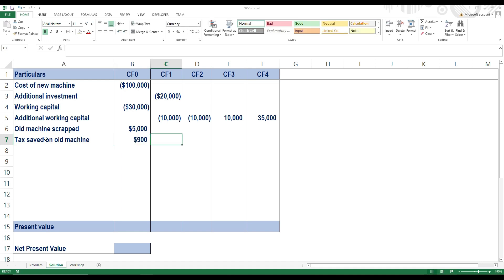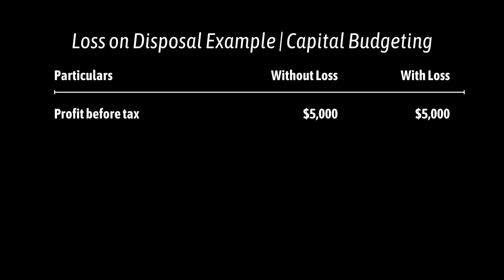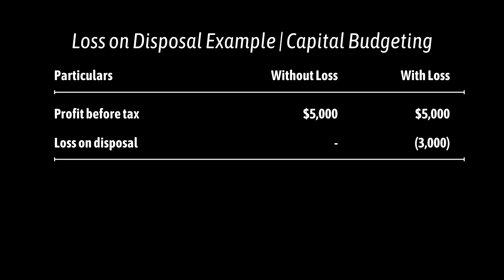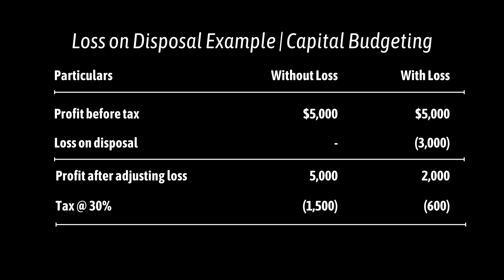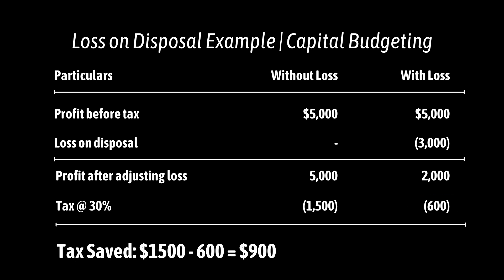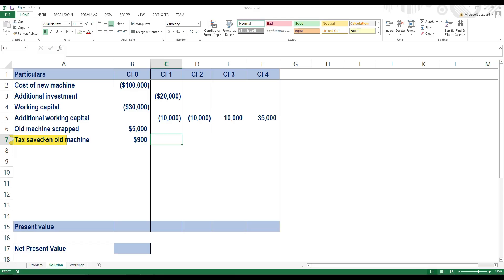Let me explain the tax saving with a comparative example. Assume company profit before tax is $5,000. In the first case with no loss on disposal, the company pays 30% tax on $5,000, which is $1,500. In the second case, with a loss on disposal of $3,000, the profit reduces to $2,000 and tax reduces to $600. The difference — $1,500 minus $600 — equals $900, which is the tax saved by claiming this loss. That's exactly the amount entered as a cash inflow in our NPV calculation. With that, we have also completed our initial cash flows.